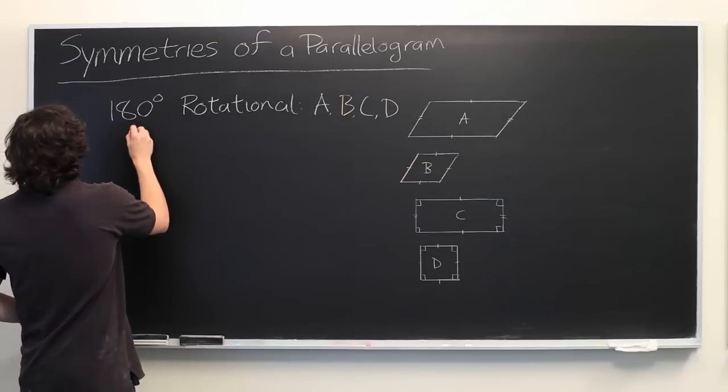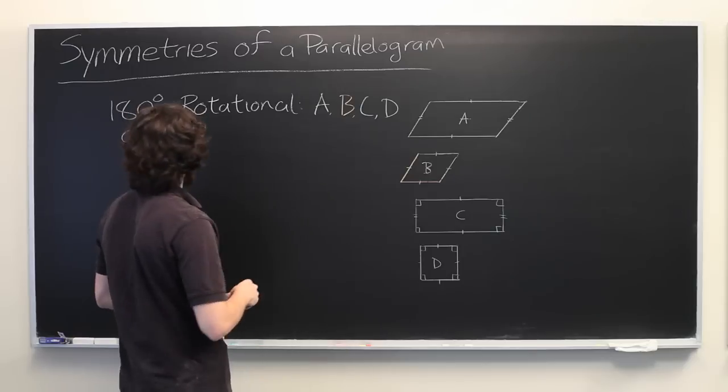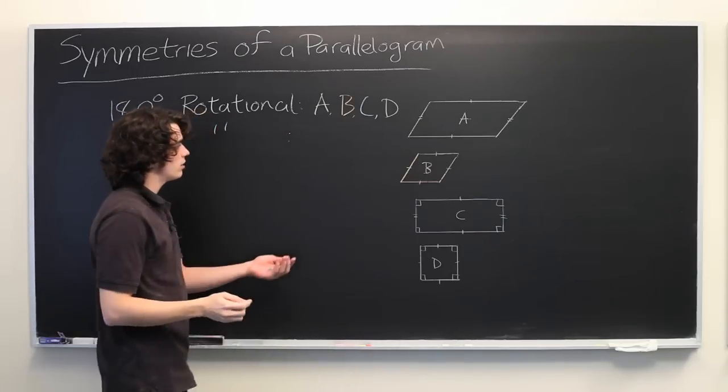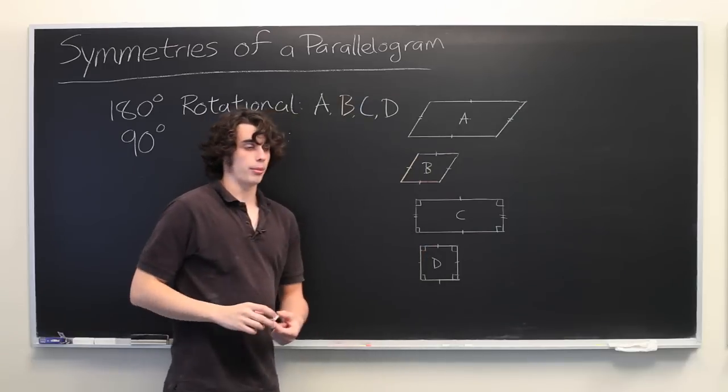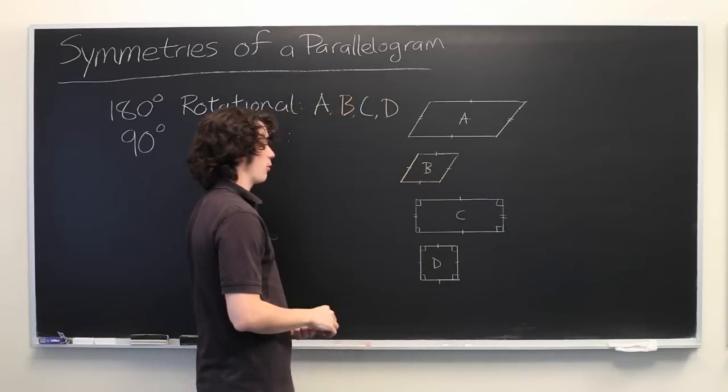Well, what about 90 degree rotational symmetry, meaning we only rotate the shape one quarter turn? Do any of these have that property? The answer is yes, the square has that property. You can rotate it 90 degrees and get another square with the same orientation.